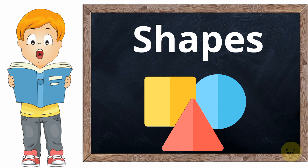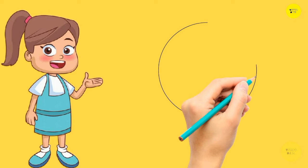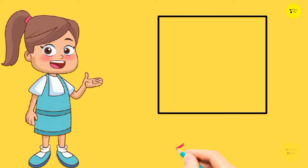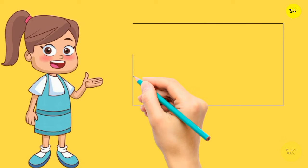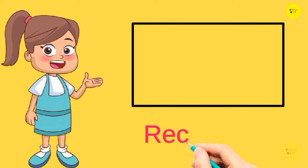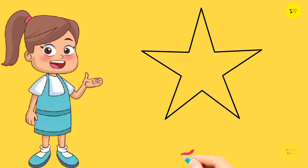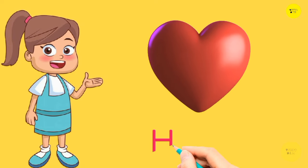Let's learn some different kind of shapes. Circle, this is a circle. Square, this is a square. Rectangle, this is a rectangle. Triangle, this is a triangle. Heart.